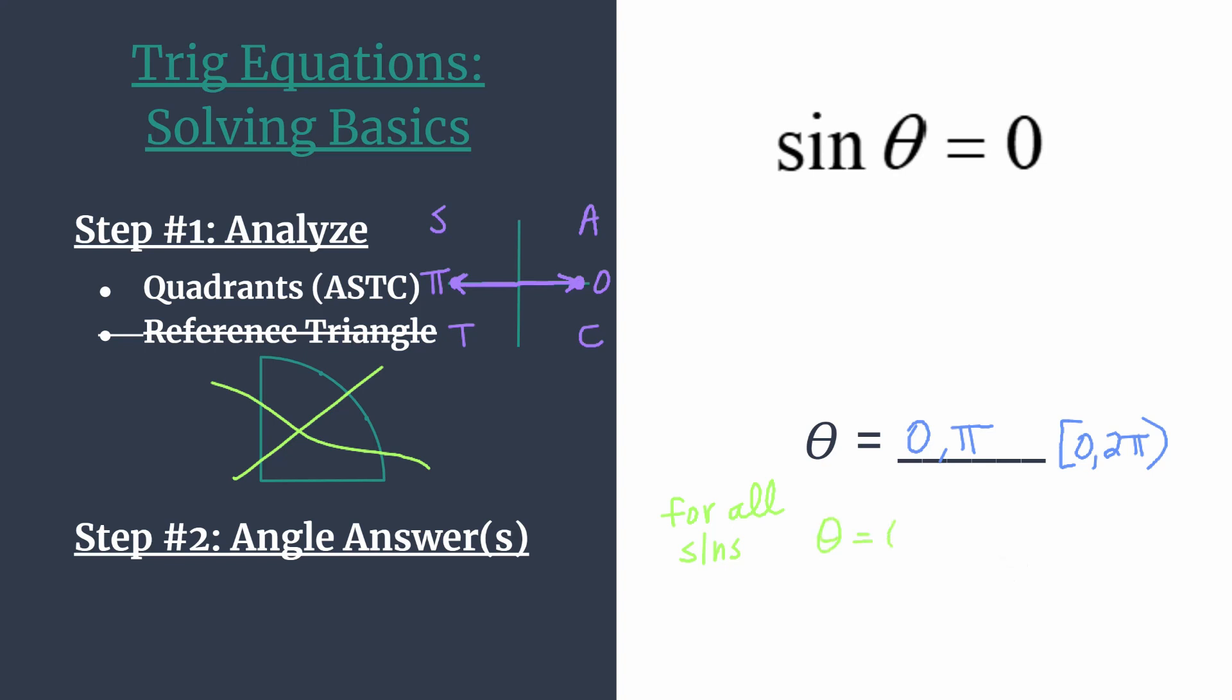So we'll say zero, and then a solution is going to happen every pi or every half rotation. So looking back to our diagram, here's a half rotation, and then you'd have another half rotation. So two pi would also be a solution—that's coterminal to zero. If you kept going around, you'd see that three pi would be a solution, that's coterminal to pi.